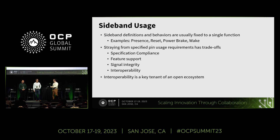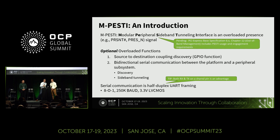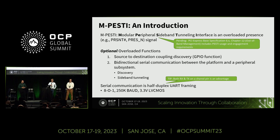So what can we do when we have these FlexIO overloaded signals, or we get to a situation when these FlexIO signals are not enough? This is why PESTI is born. PESTI is a peripheral sideband tunneling interface that extends the number of sidebands that can be signaled between an HPM and a peripheral.